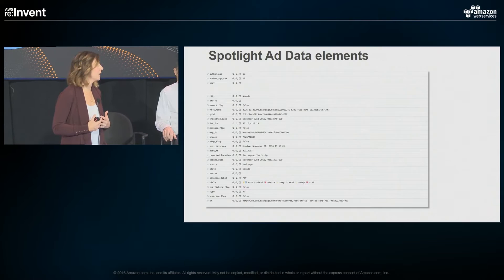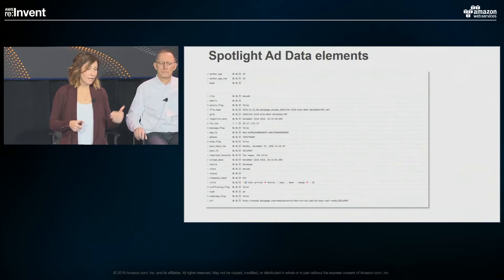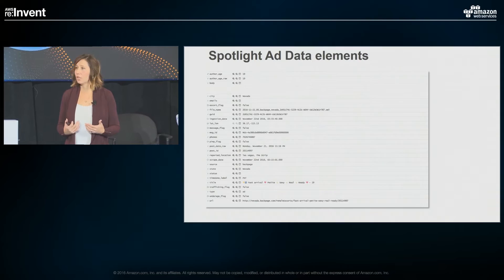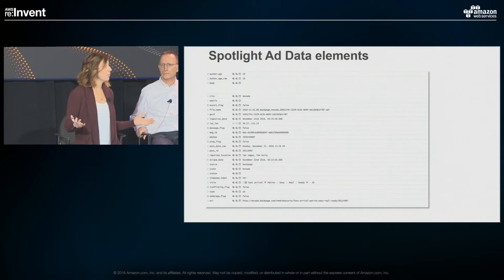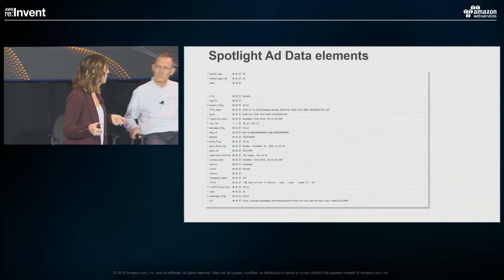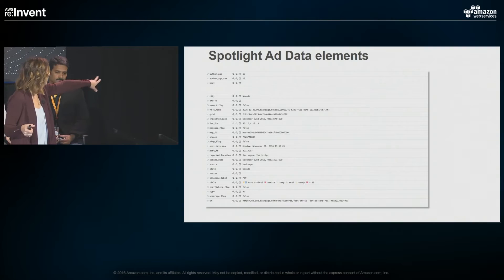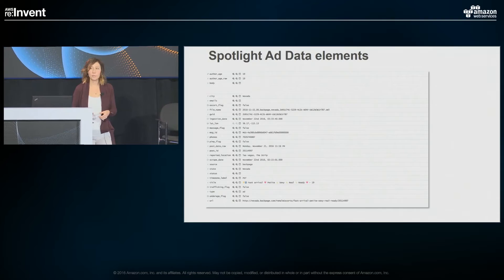We're ingesting close to about 200,000 ads on a daily basis. You're going to see information about the author, the body, the city — we have structured data and also unstructured data. Some of the unstructured data we're looking at includes the actual posting content — what they're actually selling. There are two types of locations: one is selected from a drop-down field on the site, and the other is a free-form field. For example, one says 'Las Vegas Strip' as a reported location — that's a free-form field. The other information we're also processing are images.